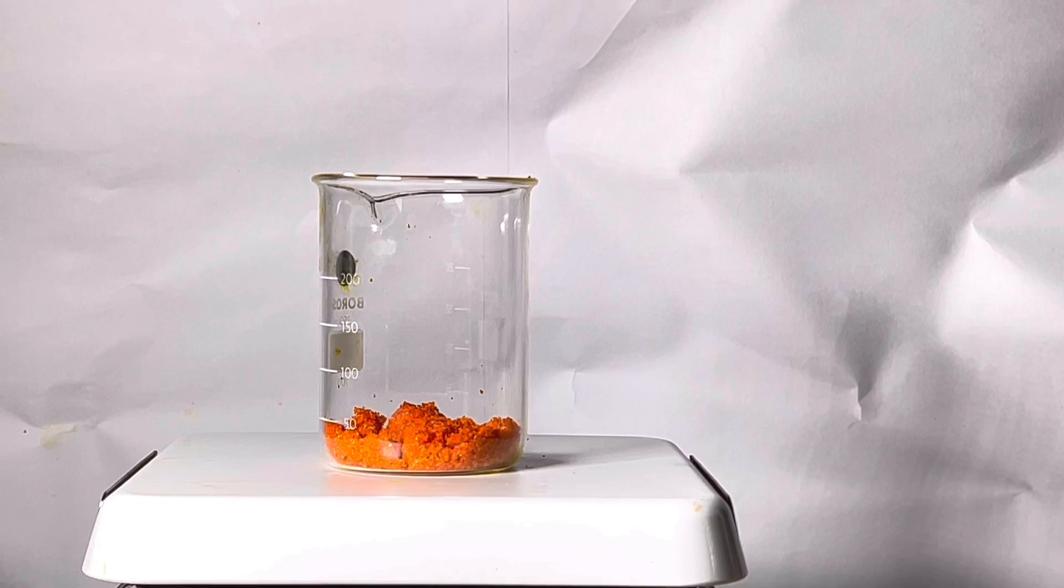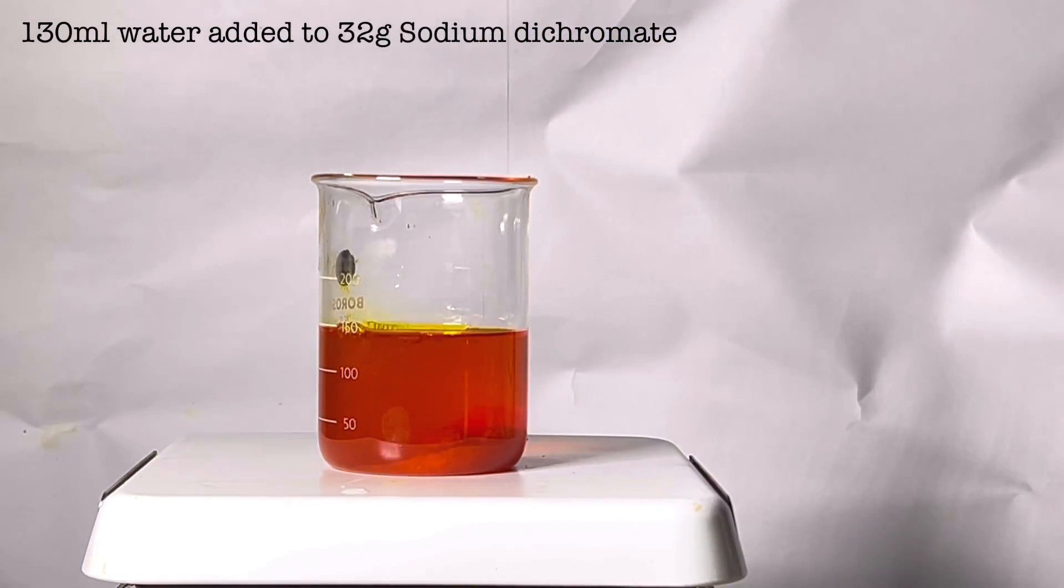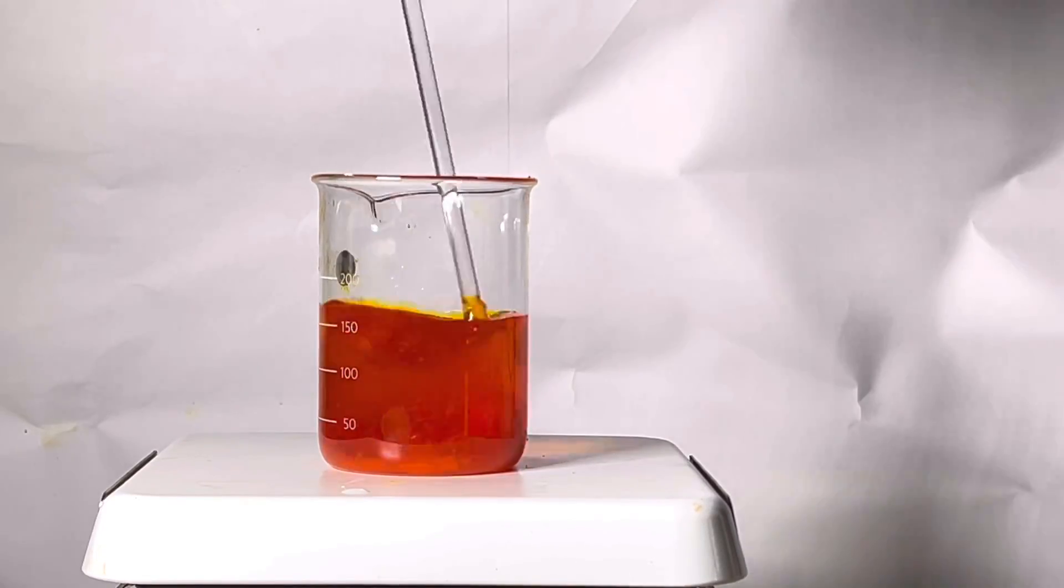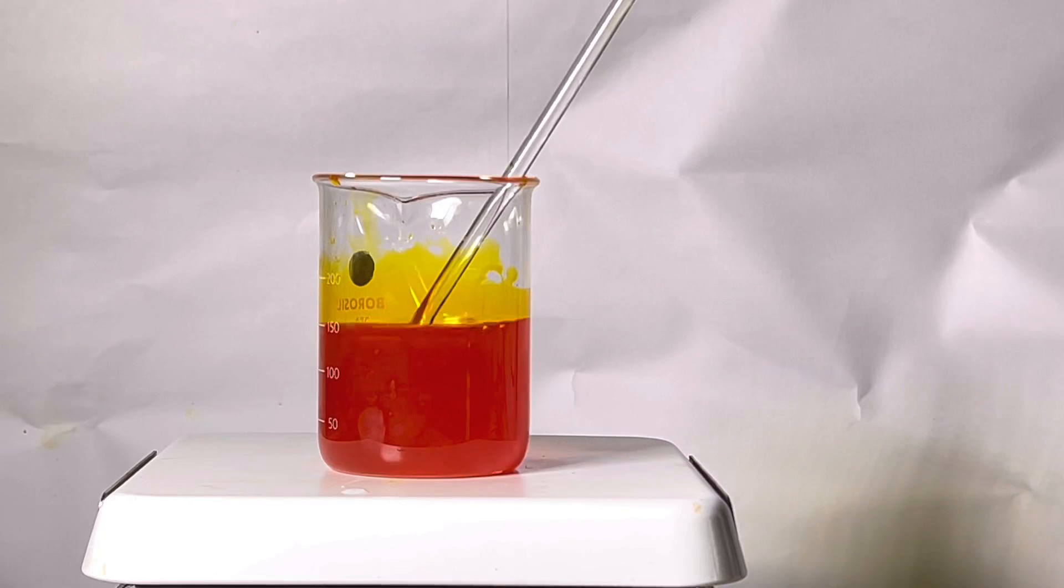First, we will make the oxidizing agent. Take 32 grams of sodium dichromate and add 130 milliliters of distilled water to it. Using a glass rod, the solution was stirred to dissolve the compound in water. Sodium dichromate is highly soluble in water and it very easily dissolves in it.